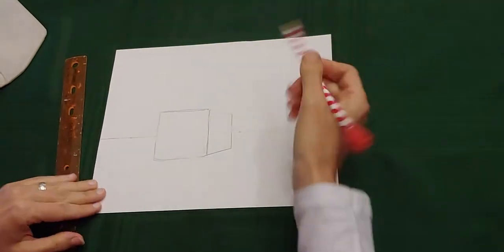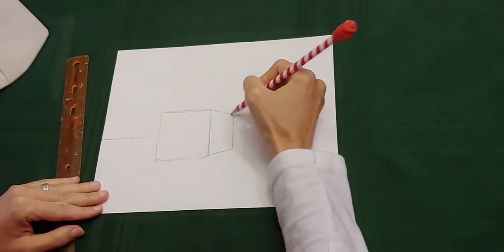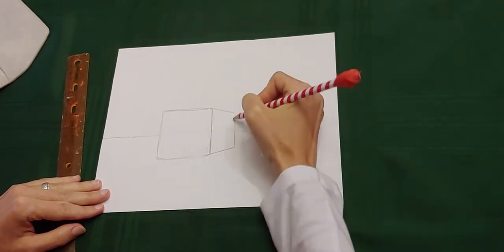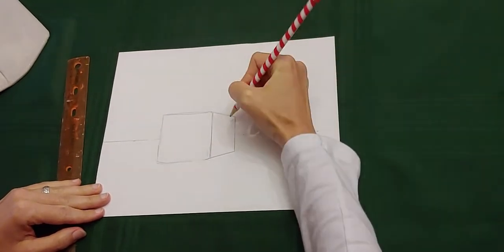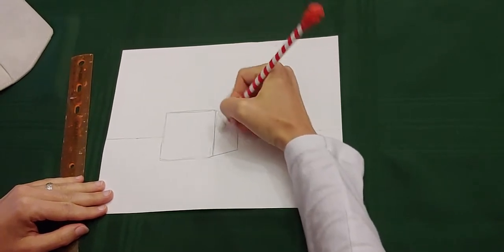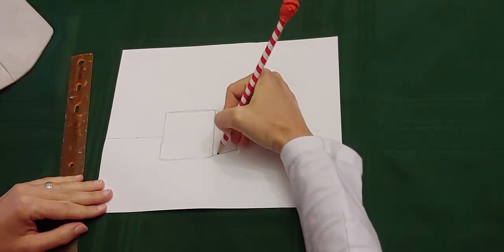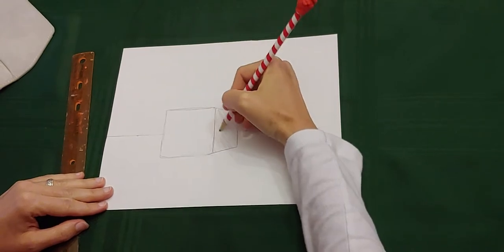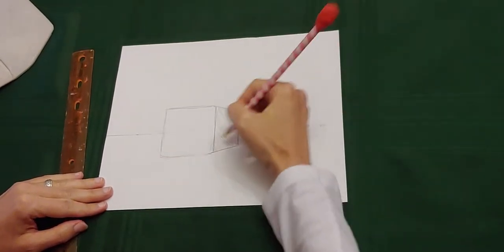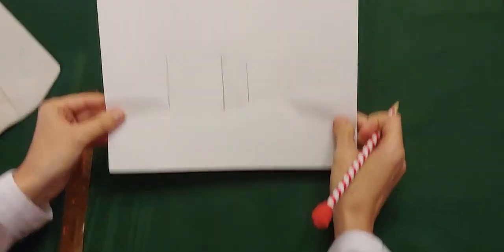Now you could shade it a little bit. Maybe the sunlight is coming in this way, so there's going to be shading right here. So that's one way that you can do one point perspective.